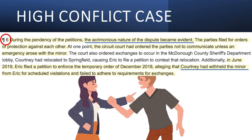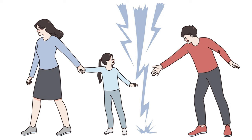Back to this case. Paragraph 6 says: During the pendency of the petitions, the acrimonious nature of the dispute became evident. The parties filed for orders of protection against each other. The circuit court had ordered the parties not to communicate unless an emergency arose with the minor. In June 2019, Eric filed a petition to enforce the temporary order of December 2018, alleging that Courtney had withheld the minor from Eric for scheduled visitations and failed to adhere to requirements for exchanges.